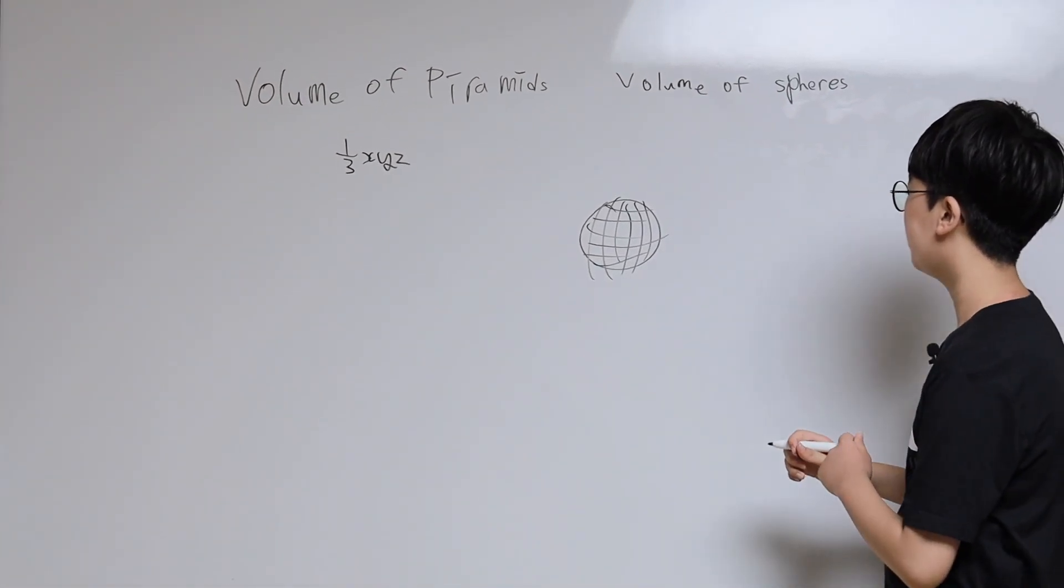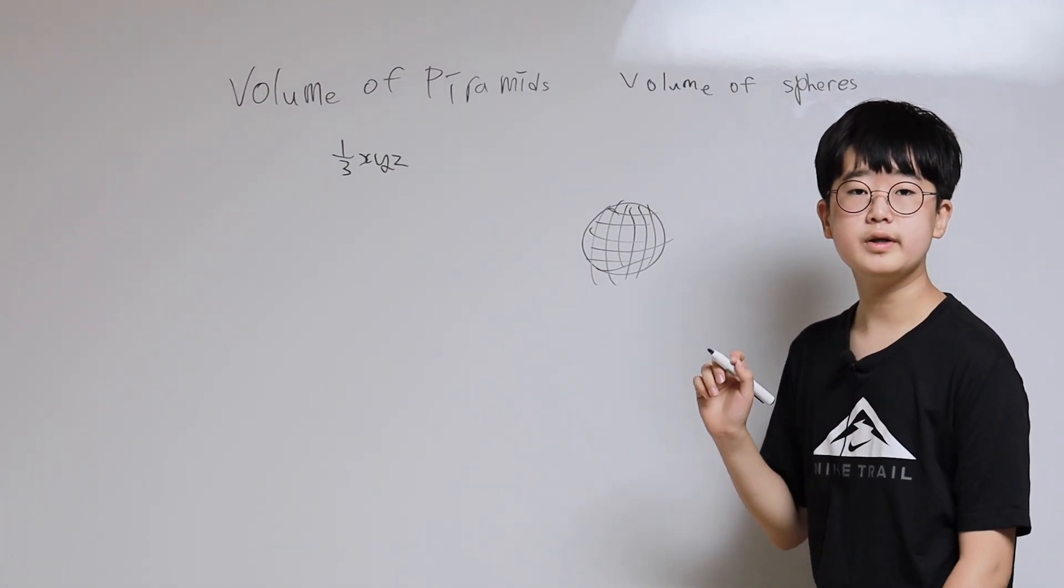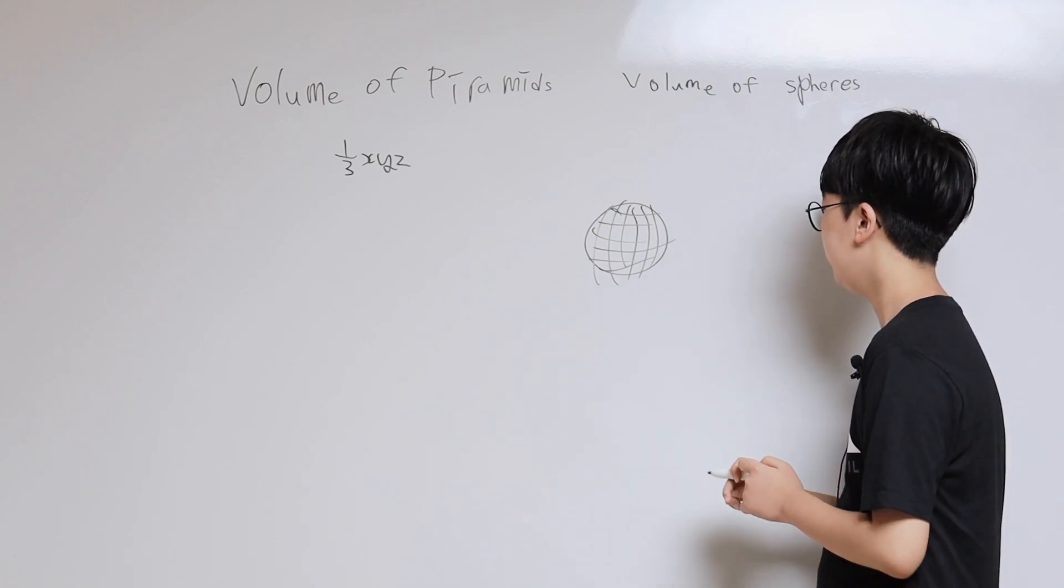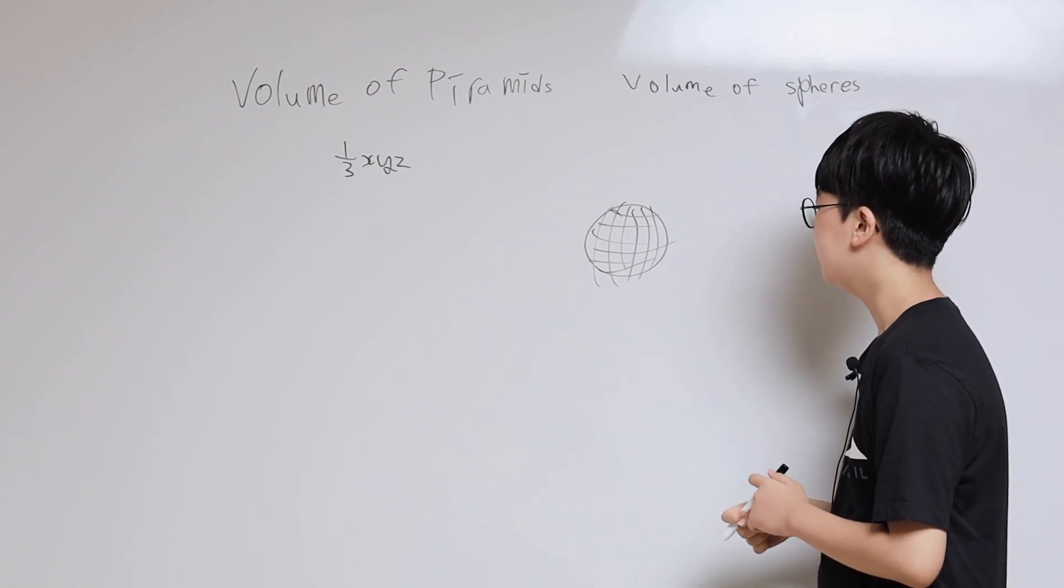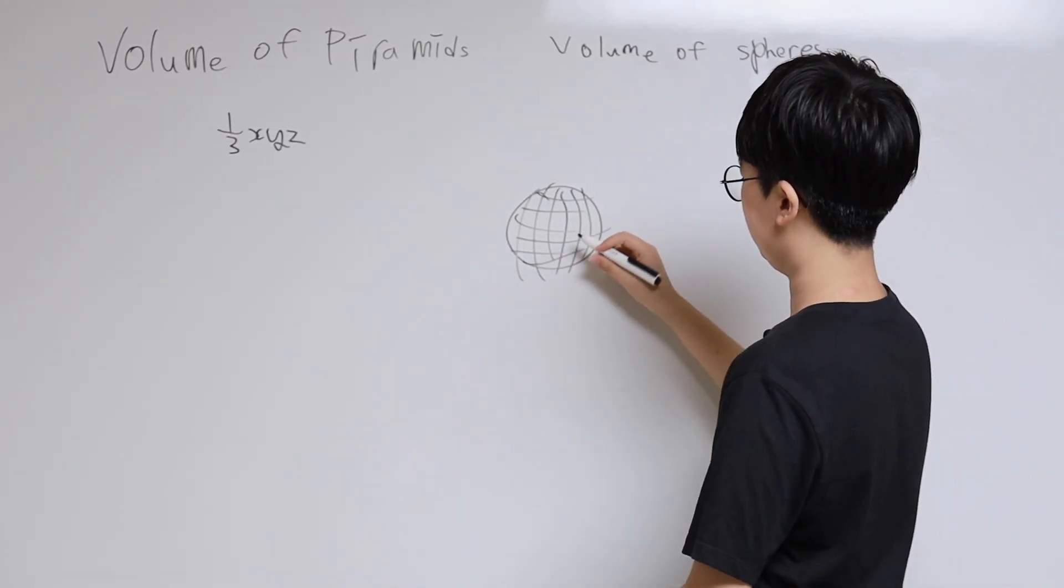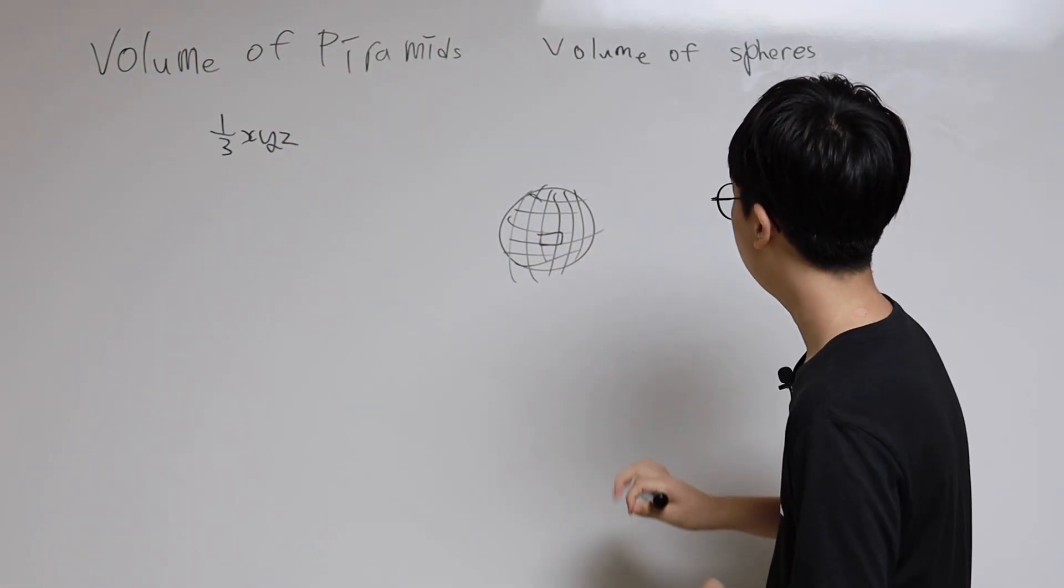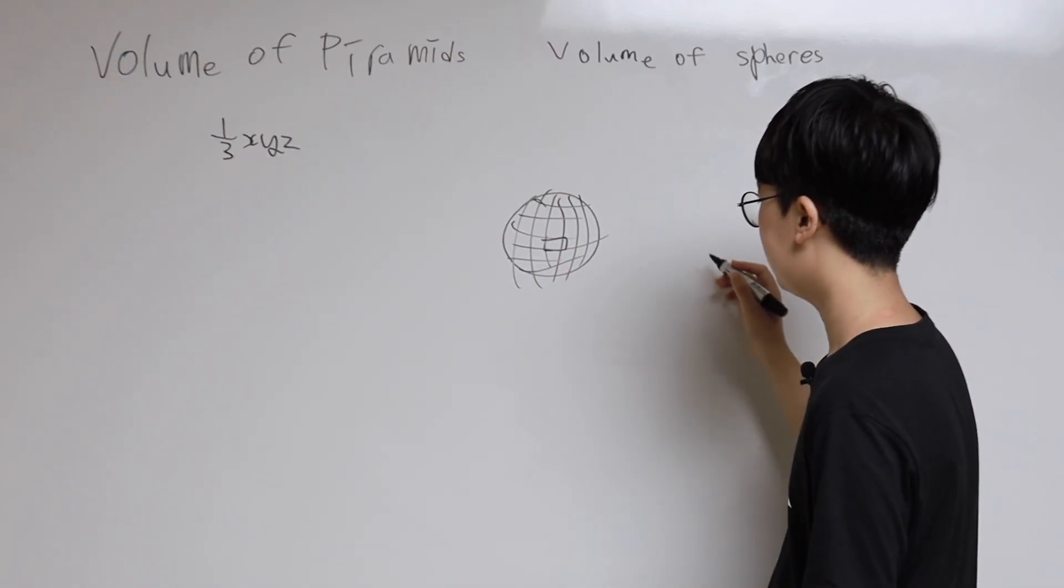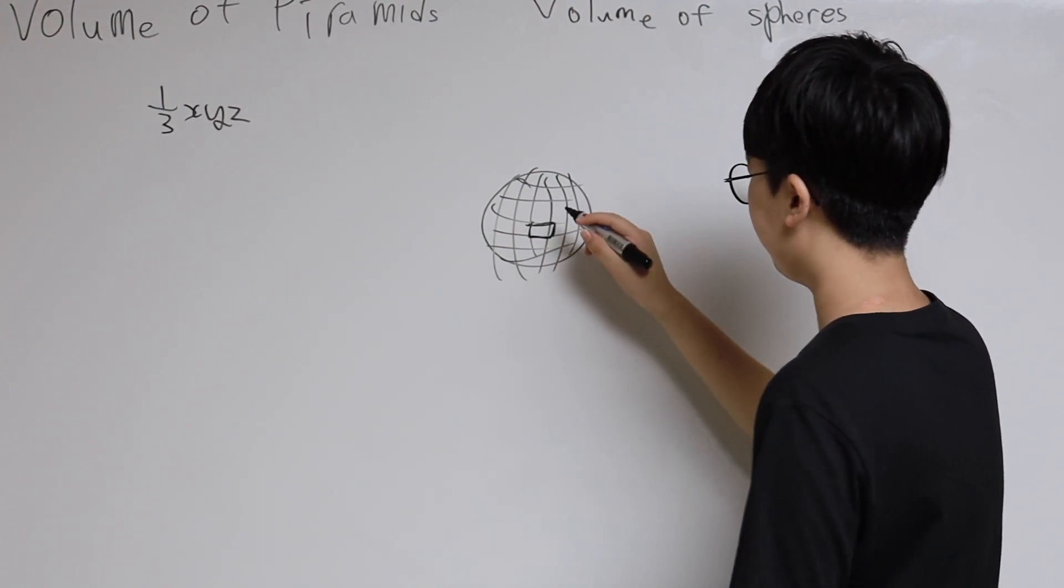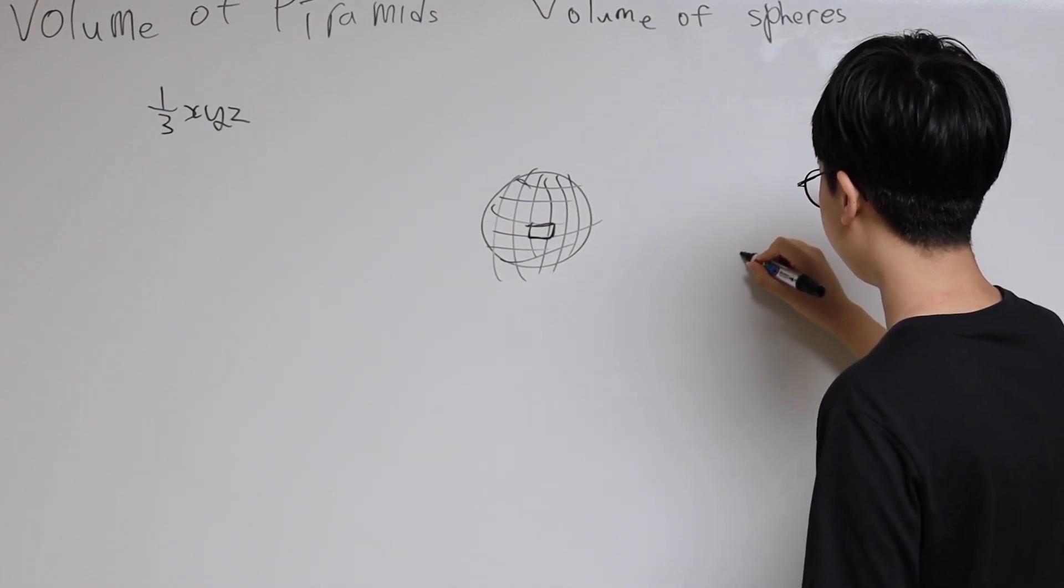What we are going to do is make those squares into pyramids. Let's think of this square over here, the square over here, and we are only going to look at this square's pyramid.